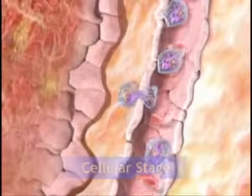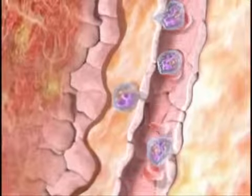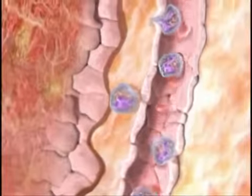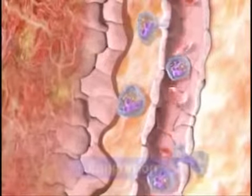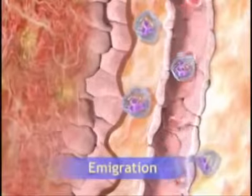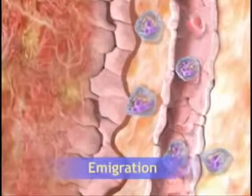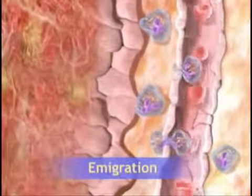The leukocytes begin to adhere to the vessel wall, and then, in a process called emigration, squeeze through the wall and move into the inflamed tissue.